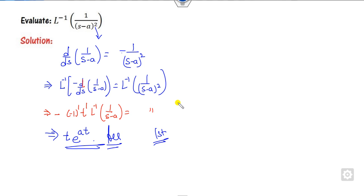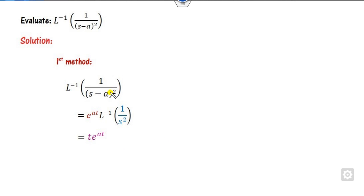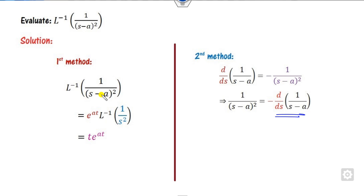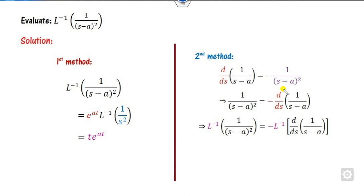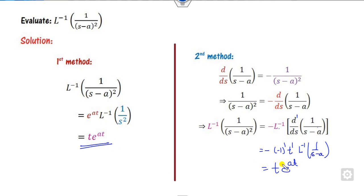What is the Laplace inverse of 1/(S − A)? This gives the required answer — this is the first method. Alternatively, you can also solve it using Type 1 because it is of the form S − A. You can take e raised to power At and this is the simplified form. Taking the Laplace inverse on both sides, with power 1, you get (−1)¹ · t¹ times the Laplace part of the remaining expression, giving t · e^(At). Both methods give the same answer.